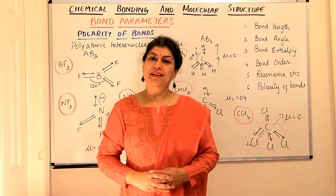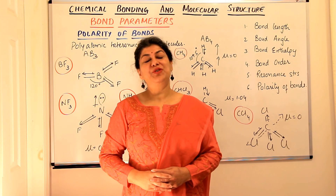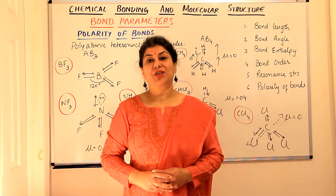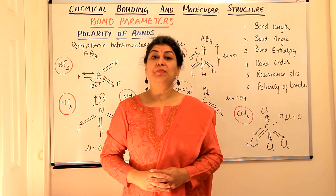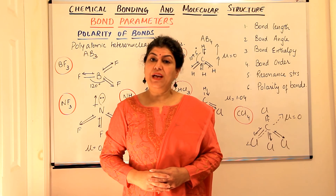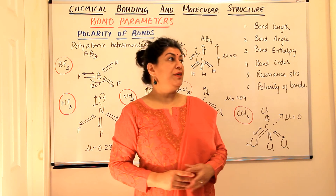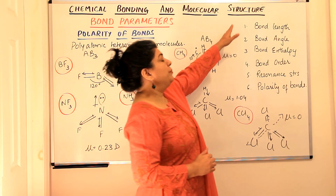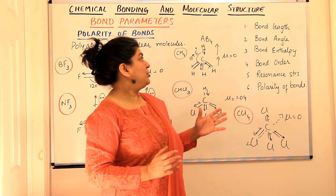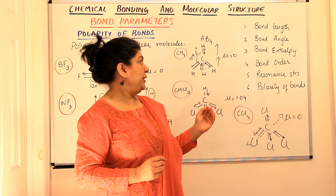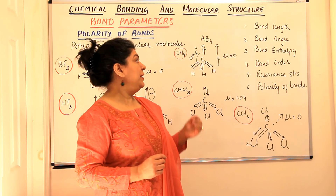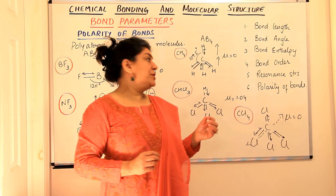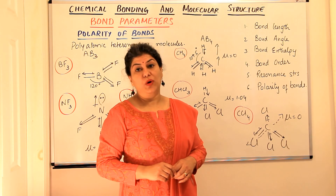Hello, I'm Seema and welcome to part 10 of the chapter Chemical Bonding and Molecular Structure. We have been discussing bond parameters and have reached the last bond parameter in the previous few videos. The bond parameters I explained were bond length, bond angle, bond enthalpy, bond order, resonance structures, and we were discussing the polarity of bonds.